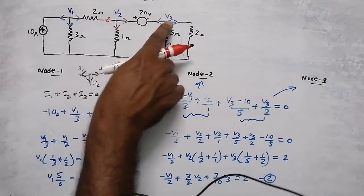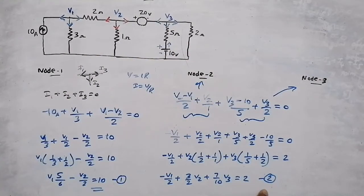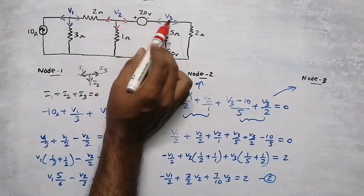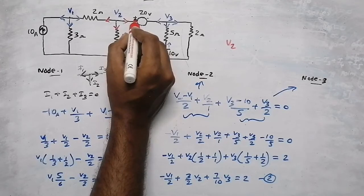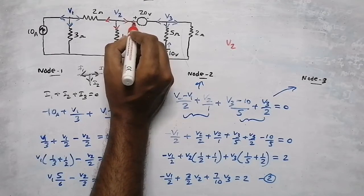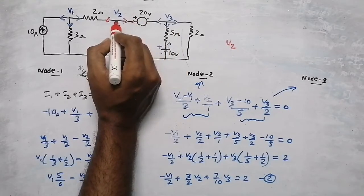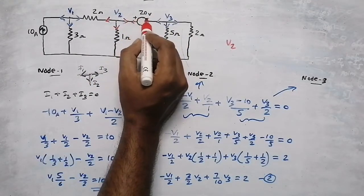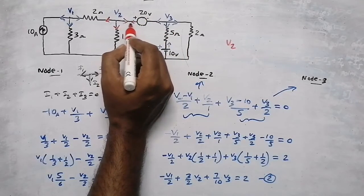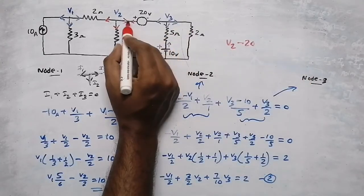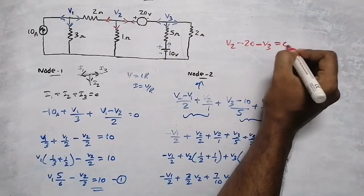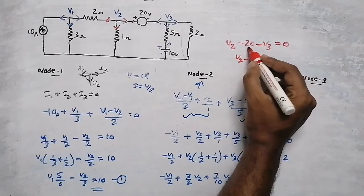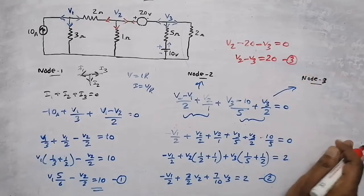Since there are three nodes, we need three equations and we have only two so far. The third equation comes from the voltage source between V2 and V3. The assumed current directions are opposite, so we write: V2 − 20 − V3 = 0, which gives V2 − V3 = 20. That is our third equation, and now we have all three equations.